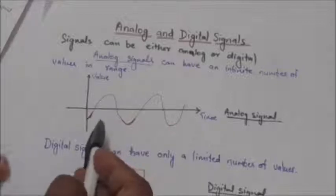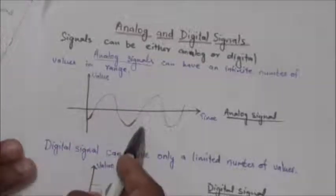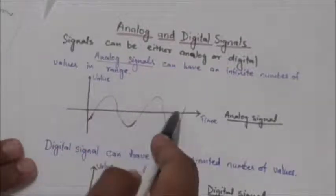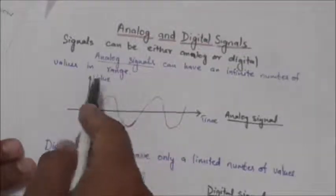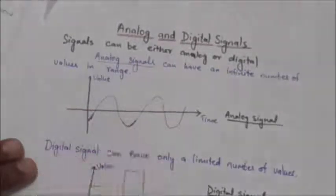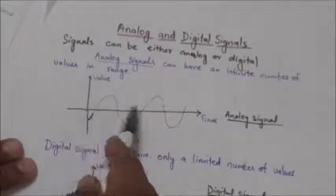The simplest way to show signals is by plotting them on a pair of perpendicular axes. The horizontal axis represents time and the vertical axis represents the value or strength of a signal. Here you can see the analog signal.